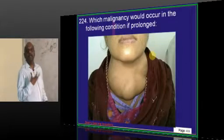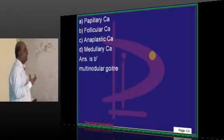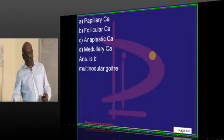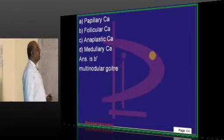Which malignancy can occur into this goiter? Into this goiter, follicular carcinoma. Multinodular goiter leads to follicular carcinoma. Is what you need to remember.